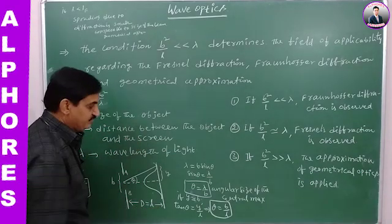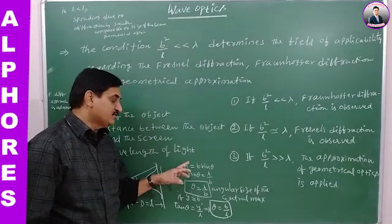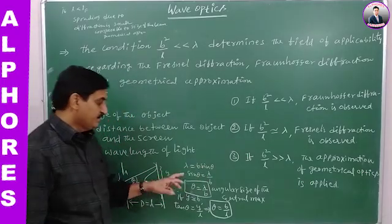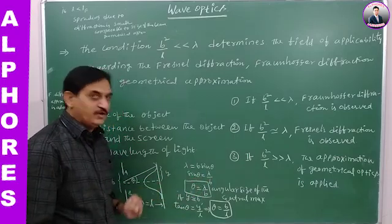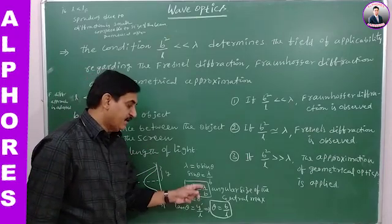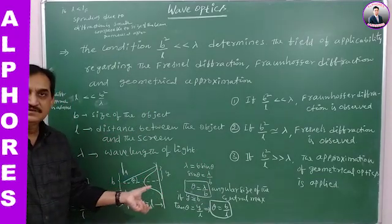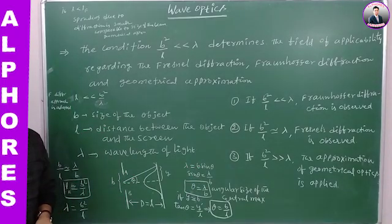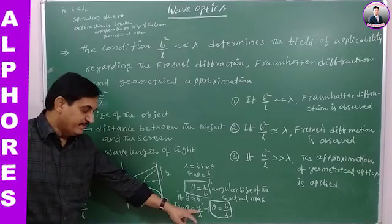Now, according to the single-slit diffraction condition: lambda equals B sine theta. So sine theta equals lambda by B. For very small theta, sine theta equals theta, therefore theta equals lambda by B, which is the angular size of the central maximum. We can also take tan theta from this triangle as equal to Y by L.